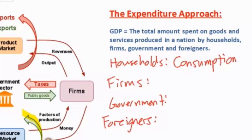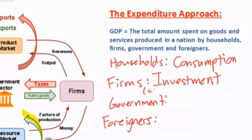The next type of expenditure is spending by firms on capital goods — this we call investment. When we use the word investment here, we're talking about a very particular type. For example, paying for private school tuition is technically not investment from an economic standpoint, because you're really buying the service of education — that's a form of consumption. Investment from a macroeconomic standpoint includes all spending by firms on capital goods, meaning the tools and technology used in the production of goods and services. Whenever a firm buys a new piece of technology or capital, this is considered investment.